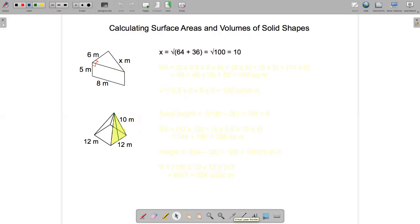Does it seem reasonable that that would be 10? Yeah, looking at the diagram it does. This distance here has got to be longer than this distance and this distance is 8, so it seems reasonable that this would be 10.